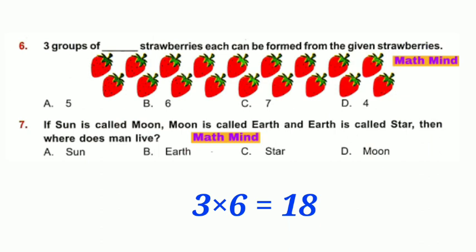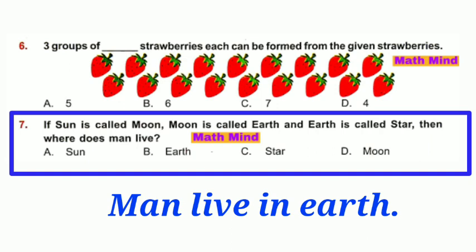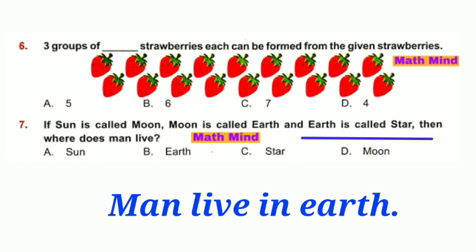Question number 7: If sun is called moon, moon is called earth, and earth is called star, then where does man live? Options: A. Sun, B. Earth, C. Star, D. Moon. Clearly, man lives on earth, but it is written that earth is called star. It means star is earth. Option C is correct.